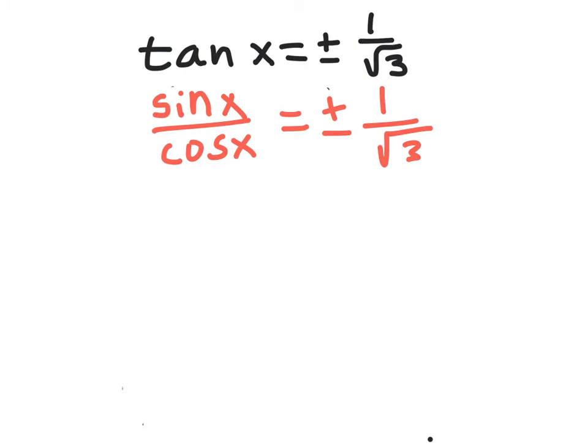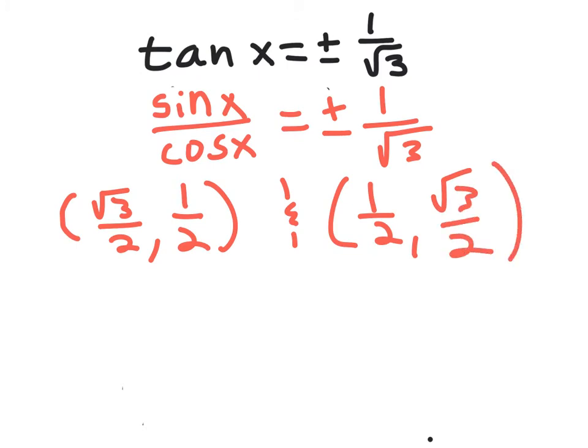Now, we're going to need our unit circle, so if you don't have it out, go ahead and pause the video, get it out, and then unpause it. Okay, to find our angle, the first thing I have to look at is my coordinates. I'm looking for a coordinate that has the square root of 3 on it. I notice on my unit circle that my π/6 angles are √3/2 and 1/2, and my π/3 angles are 1/2 and √3/2. I'm going to choose a set and divide them and see which one gives me my answer.